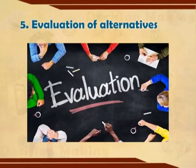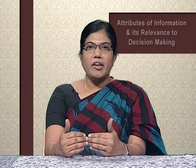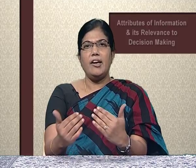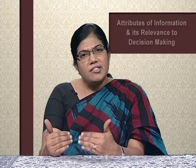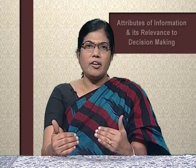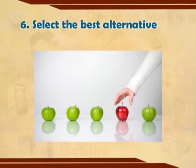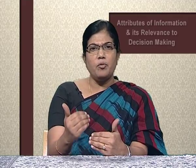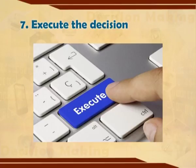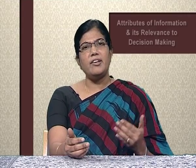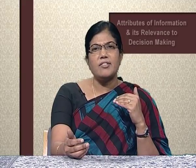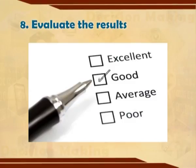Step 5 is evaluation of alternatives. Each alternative is evaluated by keeping decision-making criteria in mind. Experience and effectiveness of judgment principles come into play in this step. You need to compare each alternative for their positives and negatives. Step 6 is selecting the best alternative. After evaluation of strengths and weaknesses of available alternatives, the one best alternative is selected which helps decision making. Step 7 is executing the decision. After an appropriate decision is made, converting this decision into a plan or sequence of activities is most important. Executing the plan requires the help of subordinates to make it a success. Step 8 is evaluating the results.